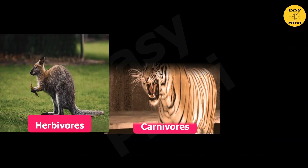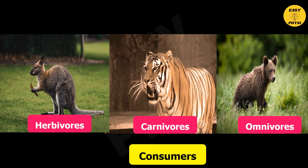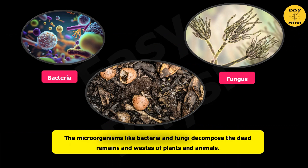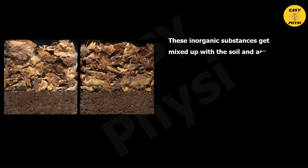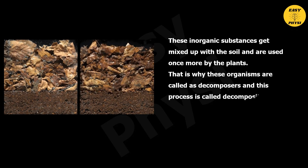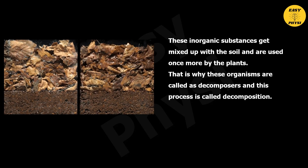Herbivores, carnivores, and omnivores are all together called consumers. The microorganisms like bacteria and fungi decompose the dead remains and waste of plants and animals — that means they break down the complex organic substances into simple inorganic substances. These inorganic substances get mixed up with the soil and are used once more by the plants. That is why these organisms are called decomposers, and this process is called decomposition.